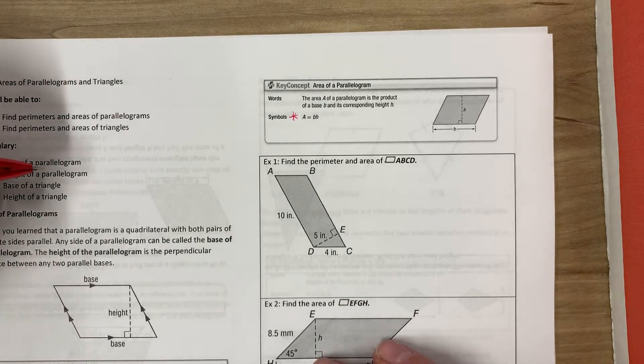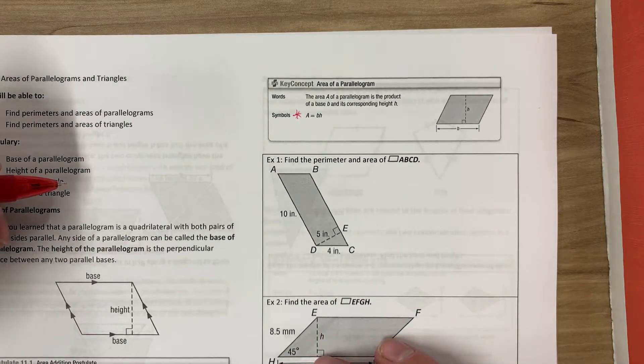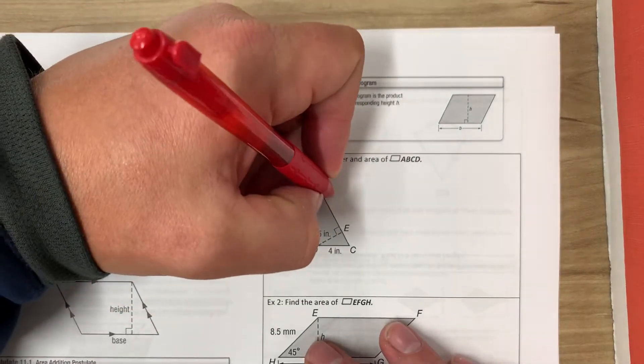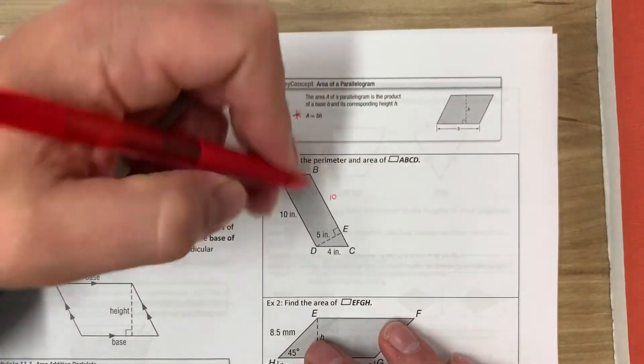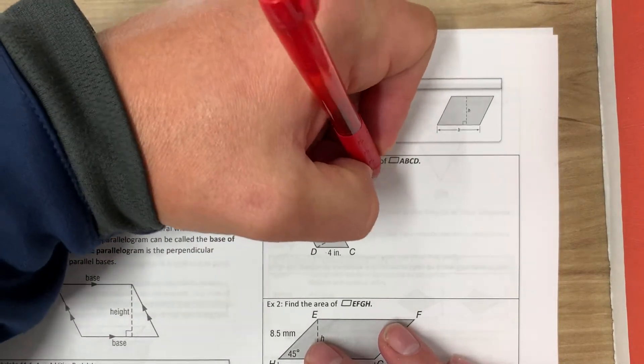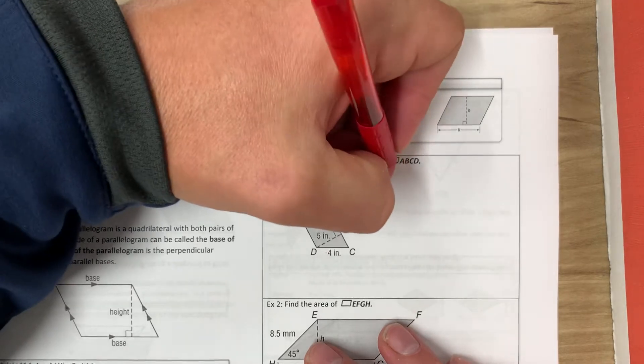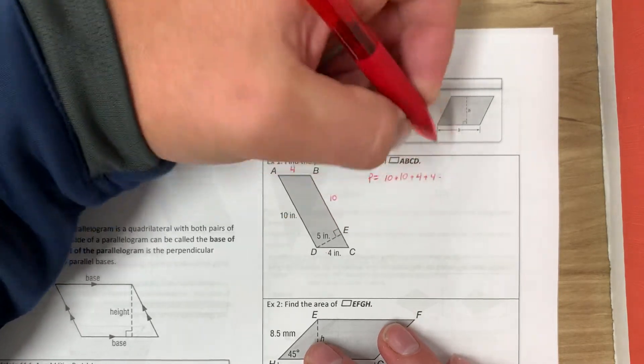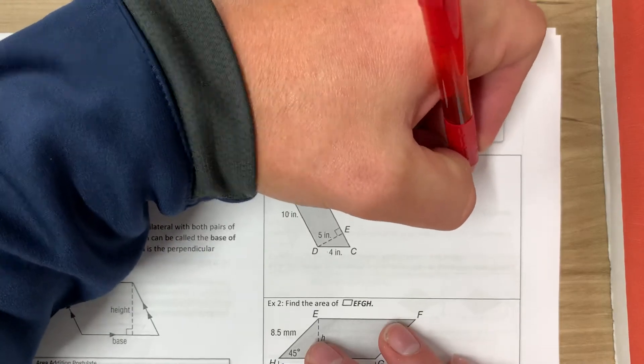Problem number one, we're finding the perimeter and area of parallelogram ABCD. For perimeter, we're just adding up all the sides. So this side would be 10, this side is 10, this side is 4, so this side would be 4. So the perimeter would equal 10 plus 10 plus 4 plus 4, which equals 28 inches.